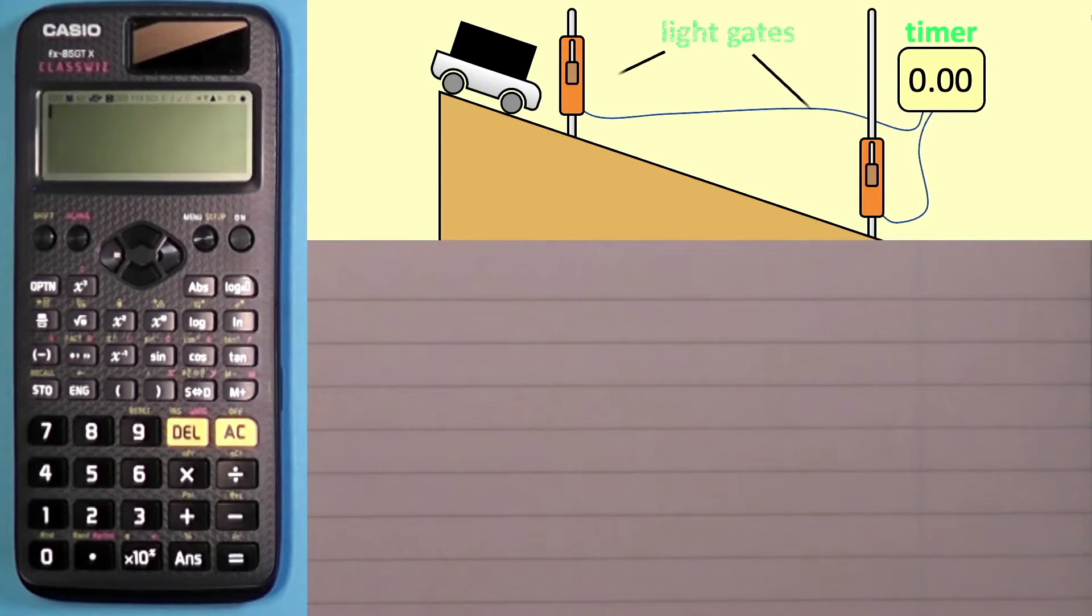Now in case you didn't know, these are the light gates. And of course the light gates you can see there are connected to a timer. So the timer is going to display the time it takes for the trolley to pass from the first light gate to the second. The trolley has a card attached to it and that card breaks the light beam. Starts the timer when it breaks the first, stops the timer when it breaks the second light gate beam.